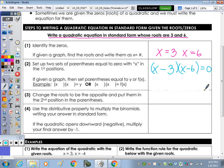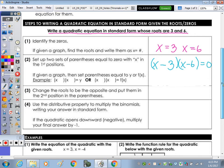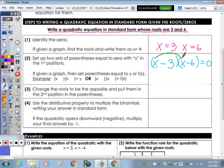And then the last step, use the distributive property to multiply the two binomials. So we've got x times x, x squared. x times negative 6, negative 6x. Negative 3 times x, negative 3 times x. And negative 3 times negative 6, positive 18. Combine the two middle terms. We've got x squared minus 9x plus 18. And we write it set equal to 0.